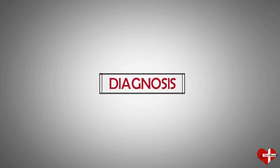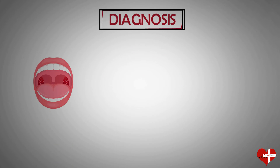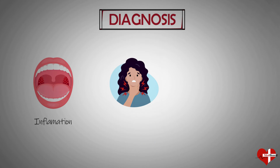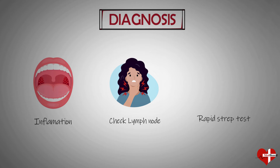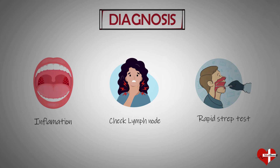Your doctor will examine your throat and check for signs of inflammation. They may also check your neck for swollen lymph nodes and ask about other symptoms. If your doctor suspects you have strep throat, they may do a rapid strep test in the office. This test determines whether your sore throat is caused by a strep infection or another type of bacteria or germ. Your doctor swabs the back of your throat with a long cotton swab, collecting a sample, which is then sent to a lab to look for signs of bacteria. Results are available in about five minutes.